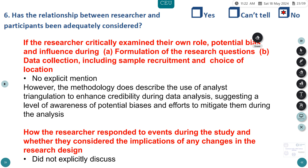Has the relationship between researcher and participant been adequately considered? The researcher has a major role in interpreting data and conducting the study. The paper did not explicitly mention whether the researcher examined their own role, potential bias, and influence during question formulation, data collection, sample recruitment, or choice of location. However, the methodology describes analyst triangulation to enhance credibility, suggesting awareness of potential bias and efforts to mitigate it during analysis.